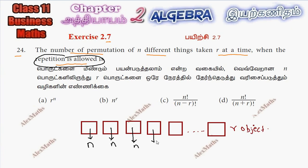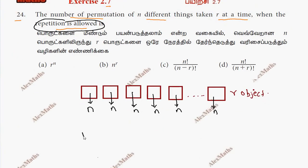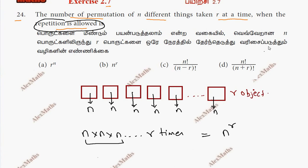The next box, we take r times — so n into n into n, dot dot dot, r times — and that gives us n power r. So this is n power r, and this is option B.